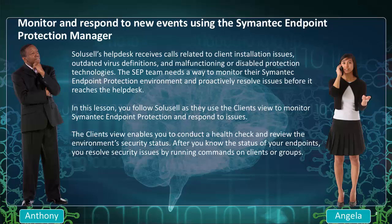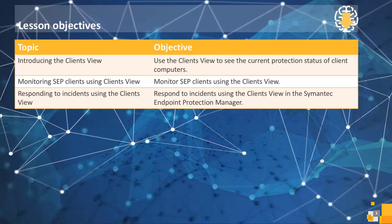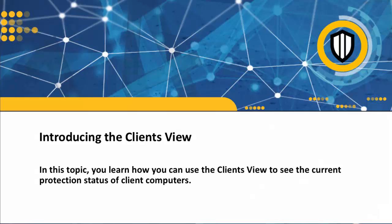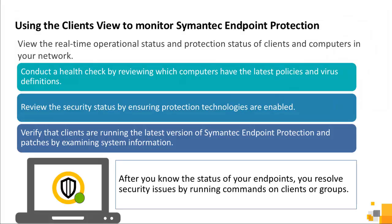The clients view enables you to conduct a health check and review the environment's security status. After you know the status of your endpoints, you resolve security issues by running commands on clients or groups. The clients view provides a real-time operation status and protection status of clients and computers in your network. You can review the security status by ensuring protection technologies are enabled, and verify that clients are running the latest version of Symantec Endpoint Protection and patches by examining system information.